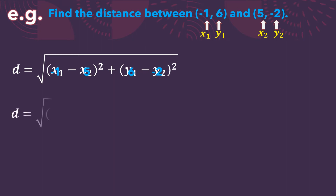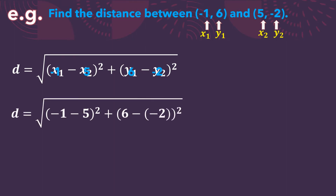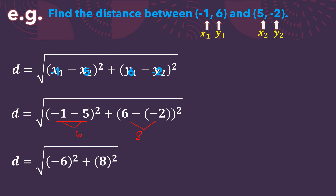Thus, d equals the square root of (negative 1 minus 5) quantity squared plus (6 minus negative 2) quantity squared. We simplify the terms inside the parentheses first. Negative 1 minus 5 gives us negative 6, while 6 minus negative 2 gives us 8. So our equation becomes d equals the square root of (negative 6) quantity squared plus (8) quantity squared.